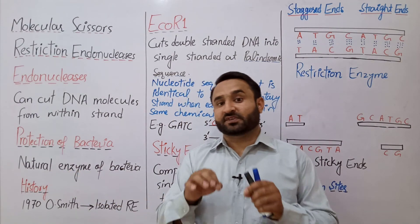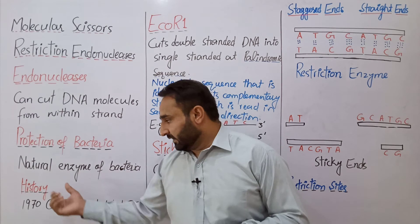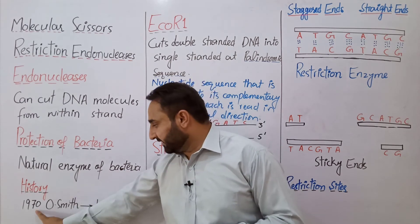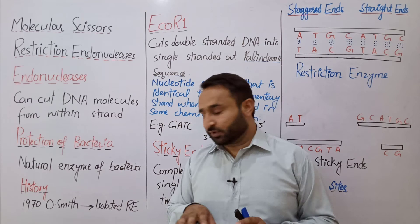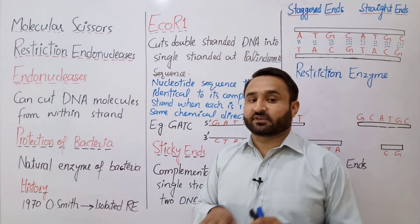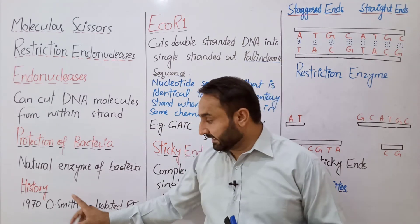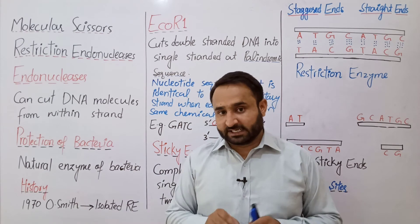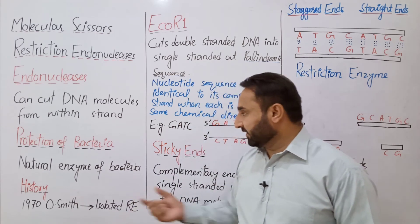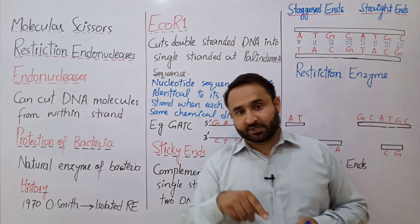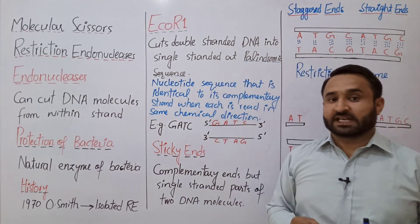These are natural enzymes of bacteria, produced naturally within bacteria. Now, looking at the history: in 1970, H.O. Smith at Johns Hopkins University isolated the first restriction enzyme from bacteria. H.O. Smith was a scientist who isolated and separated out the first restriction endonuclease.